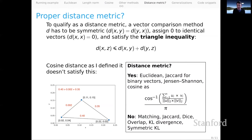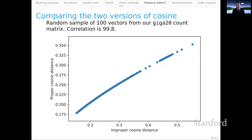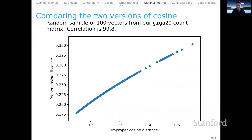One other point: the proper cosine definition is a more involved calculation, and in truth it's probably not worth the effort. Here's an example of vectors sampled from one of our vector space models, comparing the improper cosine distance on the x-axis with the proper cosine distance measure. The correlation between the two is almost perfect — there is essentially no difference between these two ways of measuring cosine. They are probably essentially identical up to ranking, which is often the quantity we care about in these comparisons. So I'd advise sticking with the simpler, less involved calculation.